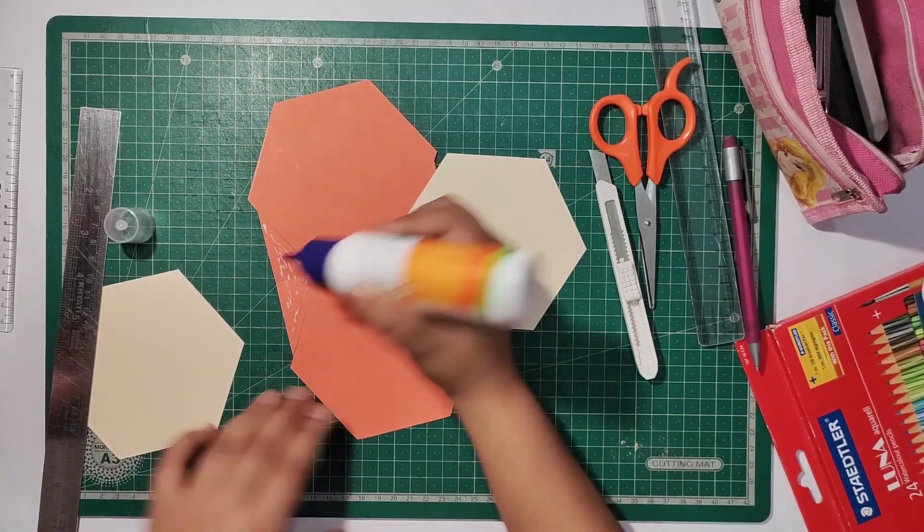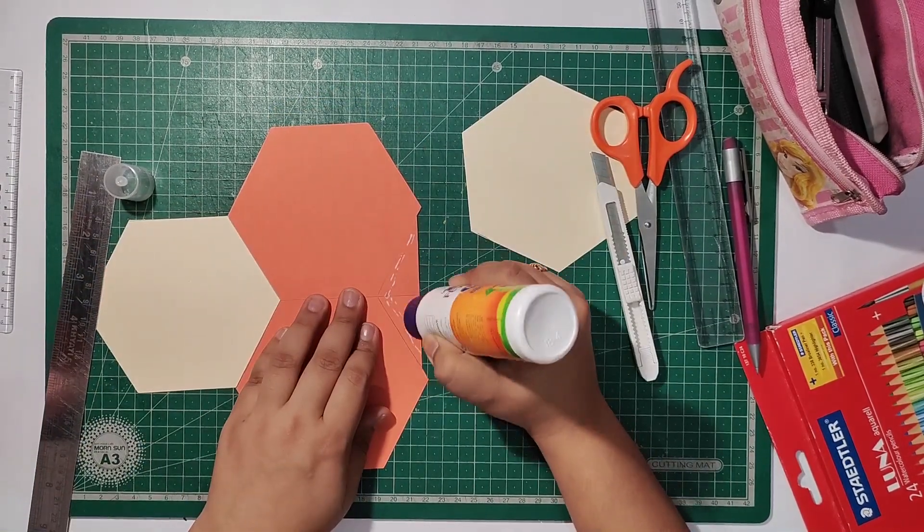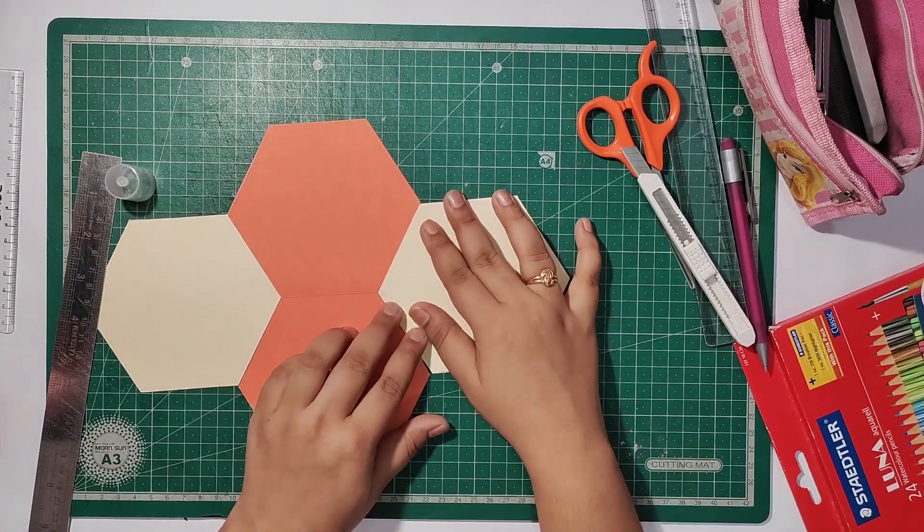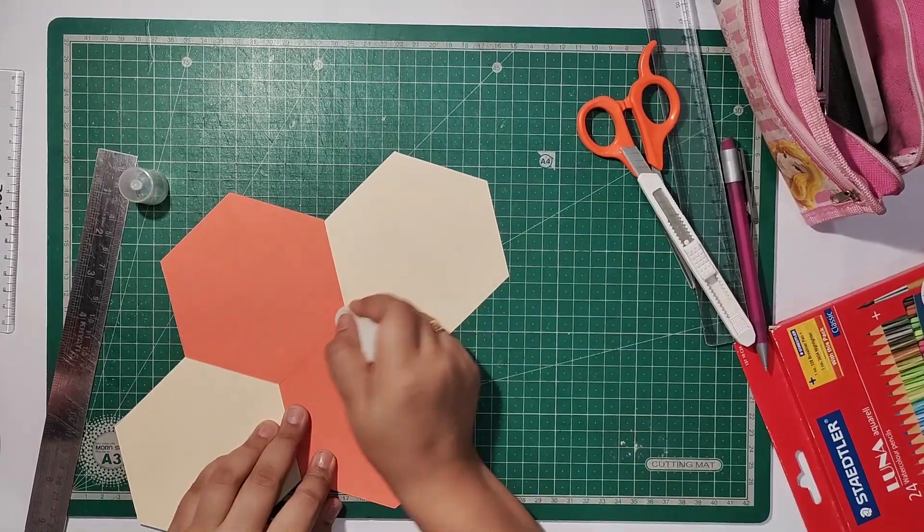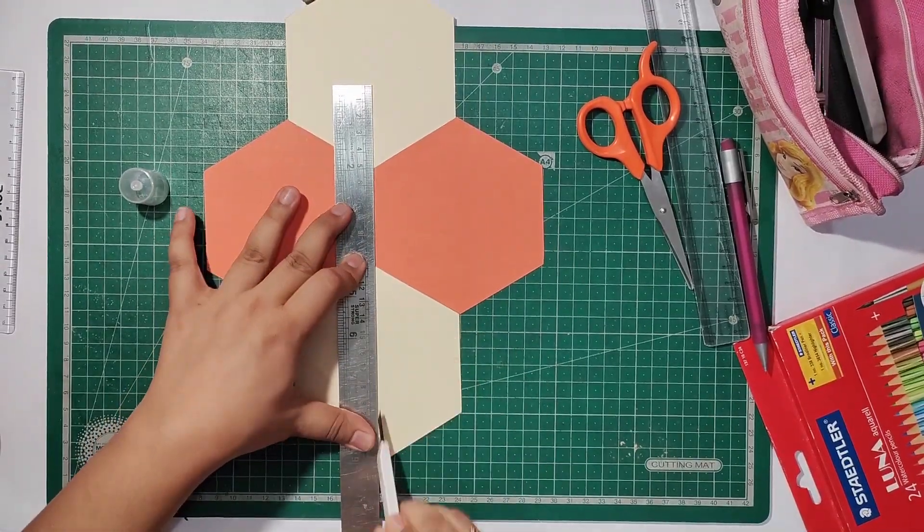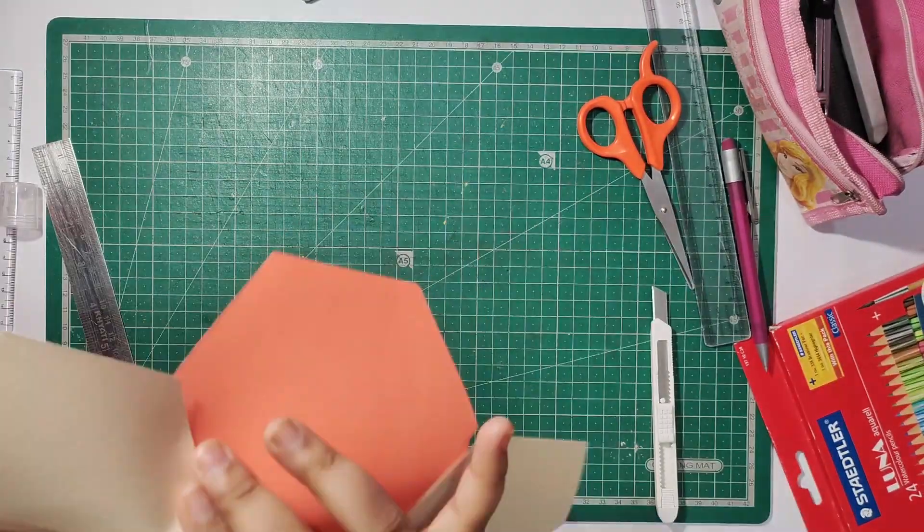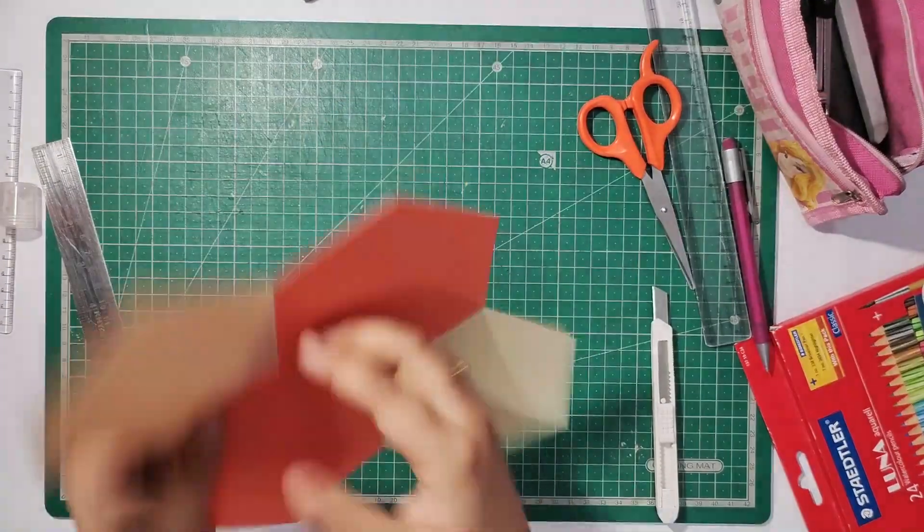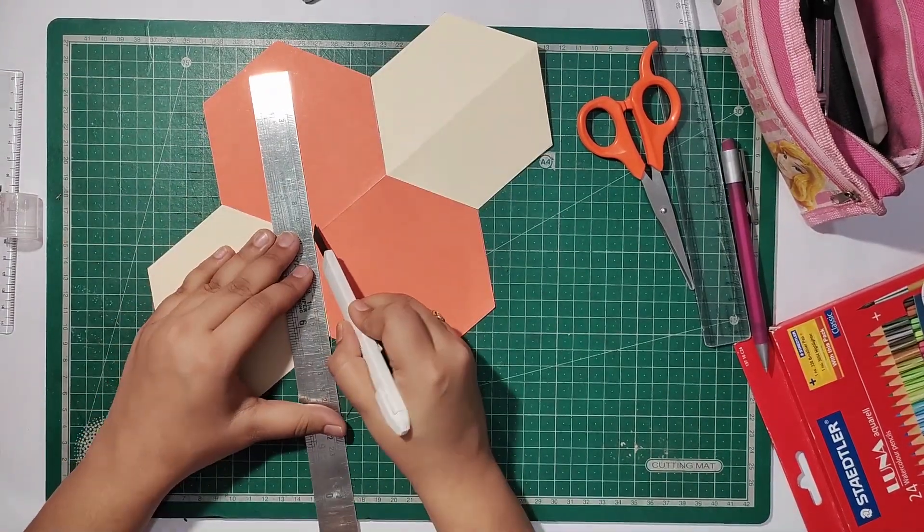I have followed this process and cut two more parts of the same size, and I am sticking them on both sides. After sticking, I have made half cuts on the folding edges. This will be our folding edge. We will cut half cuts on both sides so that our folding is sharp.